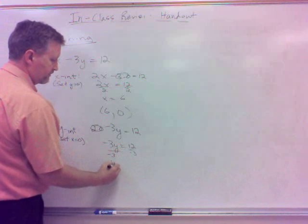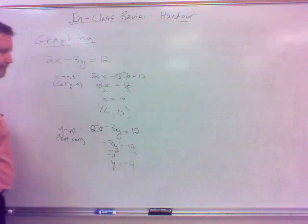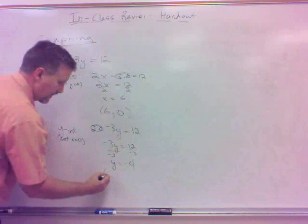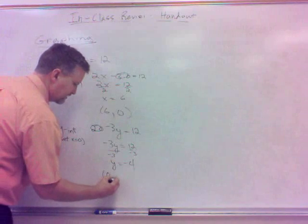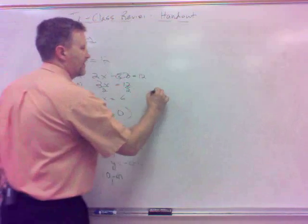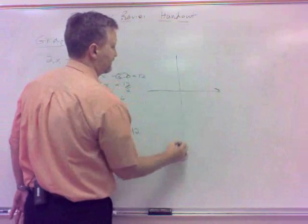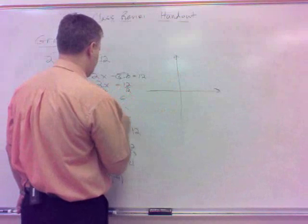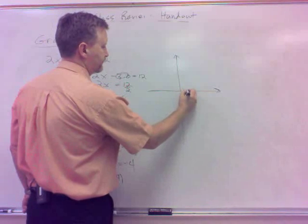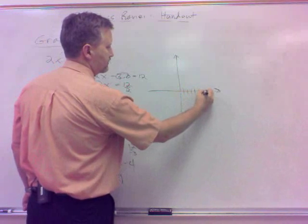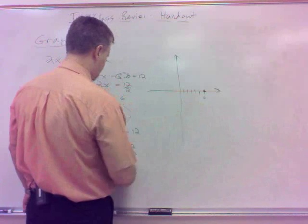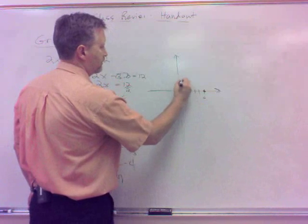Then on the reverse side of that, the y-intercept, we set x to be 0, and so that'll be 2 times 0 minus 3y equals 12. That's 0, so that's minus 3y equals 12, and so divide by negative 3, we have y equals negative 4. So that would be y-intercept, 0, negative 4.